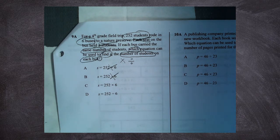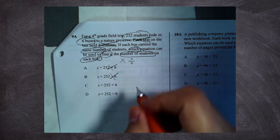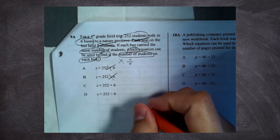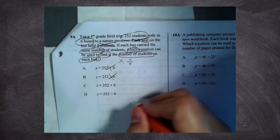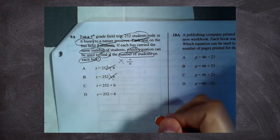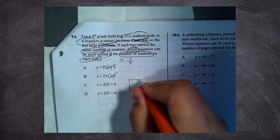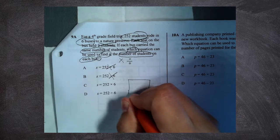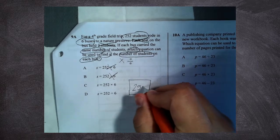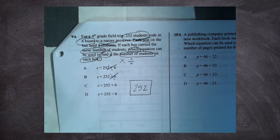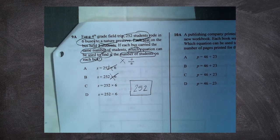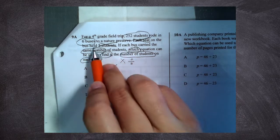I've got two answer choices here. I need to think about what's happening. I'm going to pretend that we have all these students and they're ready to go on a field trip. I don't want to draw 252 little stick figures, so I'm just going to make a box. 252 students. And to go on this field trip, the students are going to need to get on buses. There are six buses.